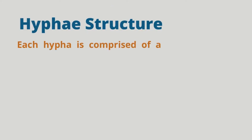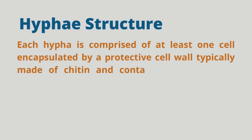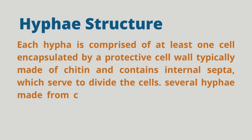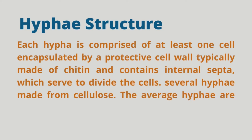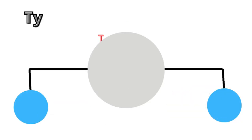Structure of hyphae: Each hypha is comprised of at least one cell encapsulated by a protective cell wall, typically made of chitin, and contains internal septa which serve to divide the cells. The average hypha is approximately 4 to 6 microns in size.